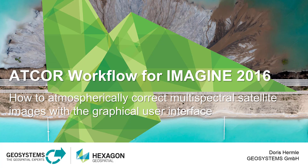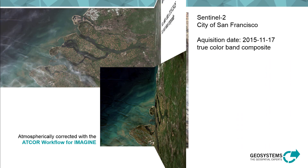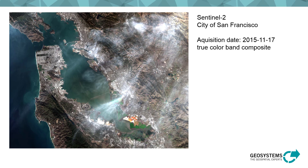Welcome to another video by Geosystems. Today I want to show you how you can atmospherically correct satellite images by using the Atcore Workflow for Imagine dialog. In this example, a Sentinel-2 multispectral image of San Francisco will first be dehazed and thereafter atmospherically corrected with Atcore-2. Additionally, a haze map with different classes will be created.